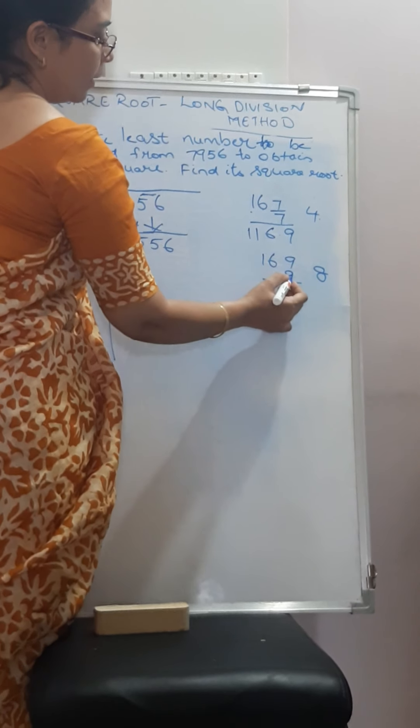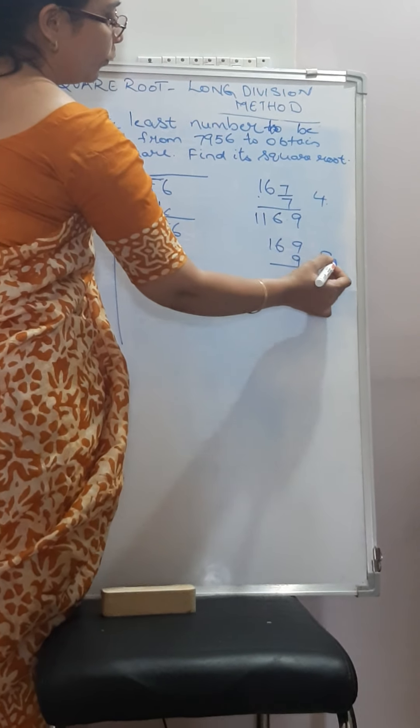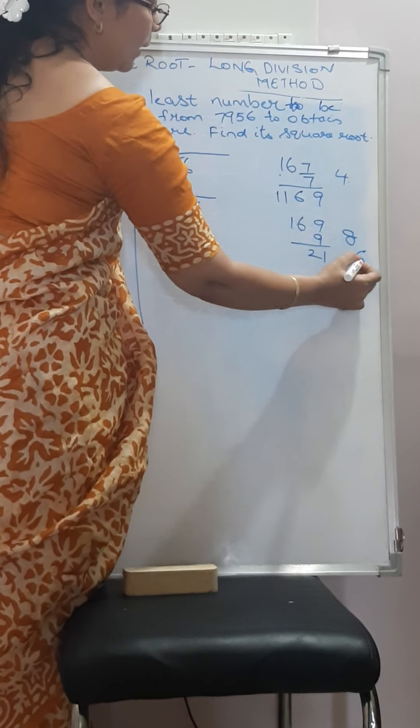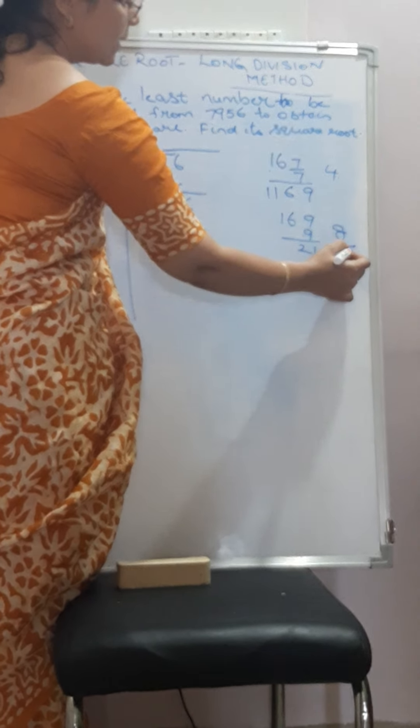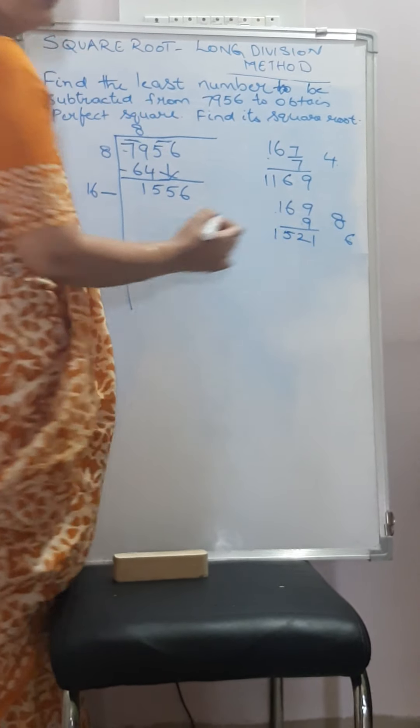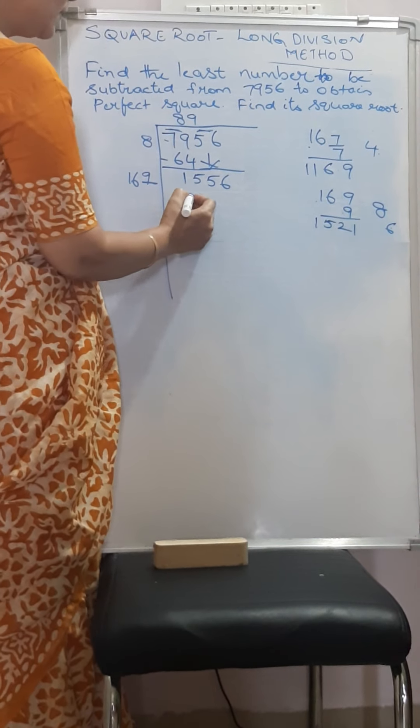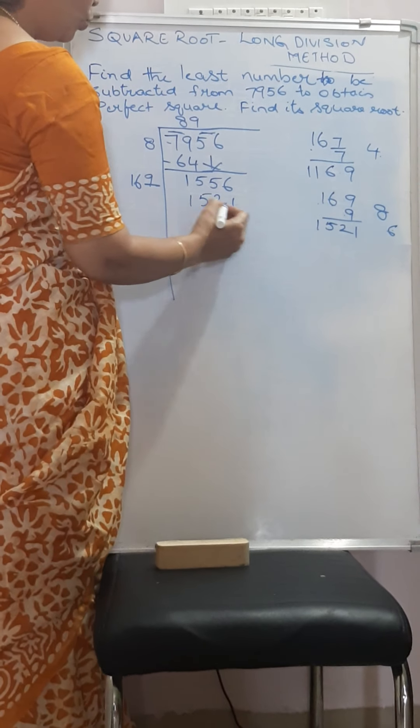9 times: 9 times 9 is 81, 9 times 6 is 54 plus 8 equals 62, 9 times 1 is 9 plus 6 equals 15. So 169 times 9 equals 1521.